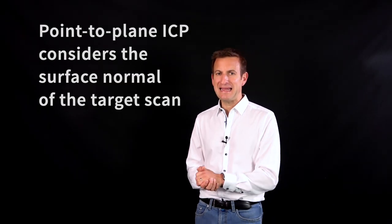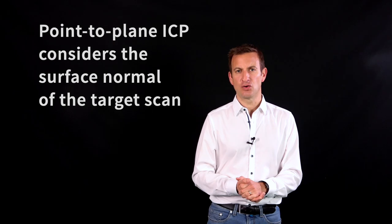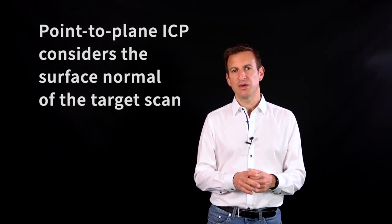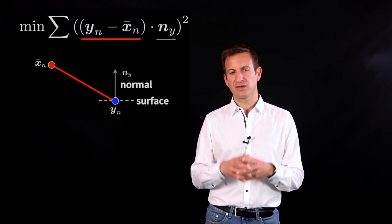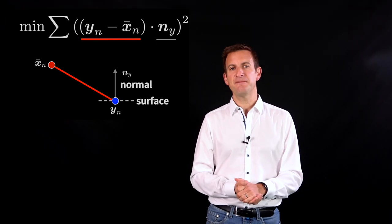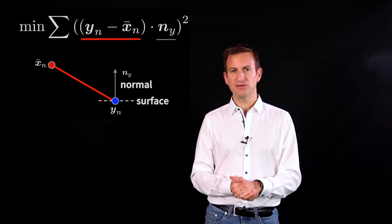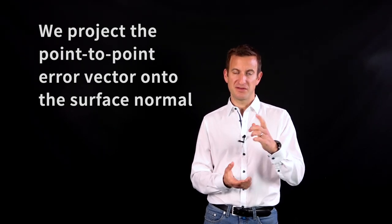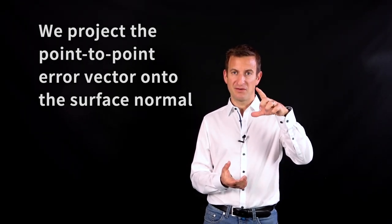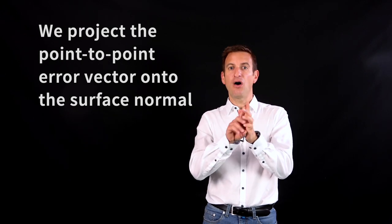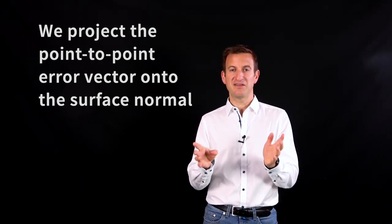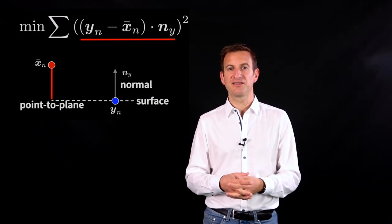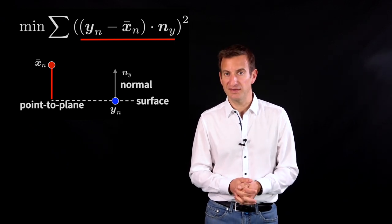What we're doing in point-to-plane ICP is that we additionally take normal information into account. We compute the surface normals—that's where the assumption of the surface comes into the game on my target point cloud—and then project the error vector, the discrepancy of two points which are closest to each other, on that surface.